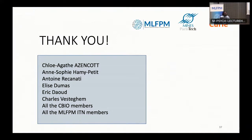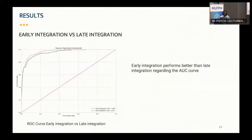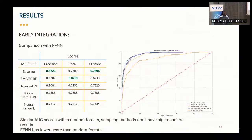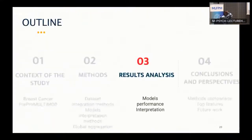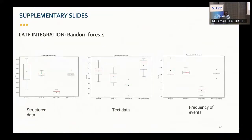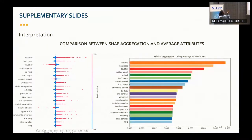A question about the third global aggregation method: does it simply average features across the dataset? The presenter clarified that it sums all the weights of a feature from all local explanations over all instances seen. This is the method that SHAP uses, and comparing it with SHAP shows the same top features, confirming consistency.